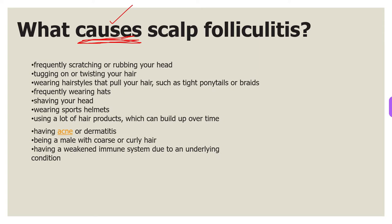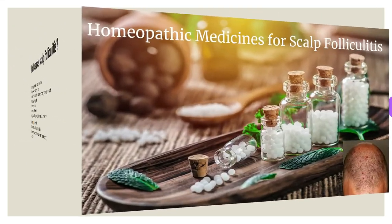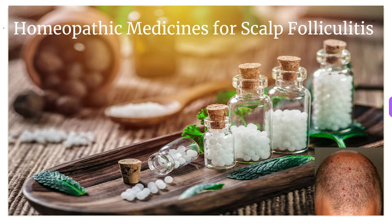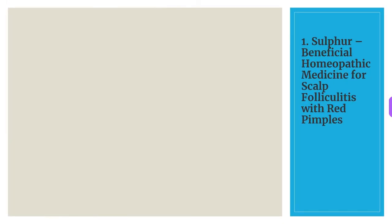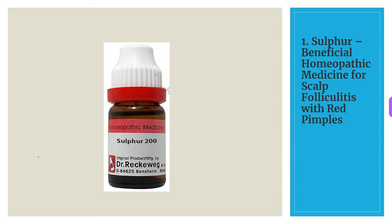Now let's talk about the homeopathic medicines for the treatment of scalp folliculitis. The first and foremost homeopathic medicine which has been successfully used is Sulfur. Sulfur is a very effective homeopathic treatment for scalp folliculitis where pimples appear on your scalp. There is dryness, itching, and burning on the scalp, and the symptoms get worsened in a warm environment and on washing the scalp.